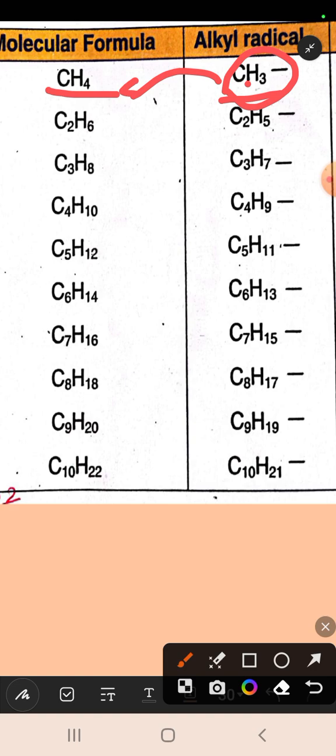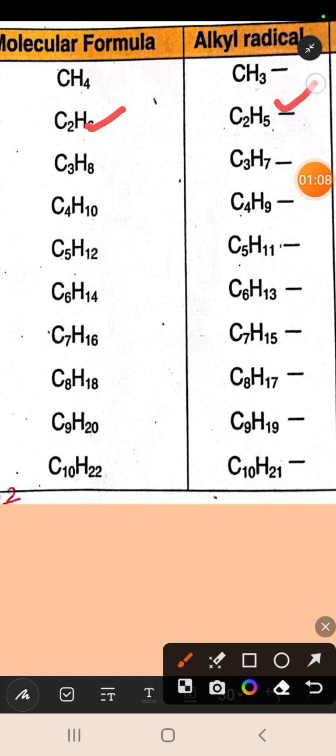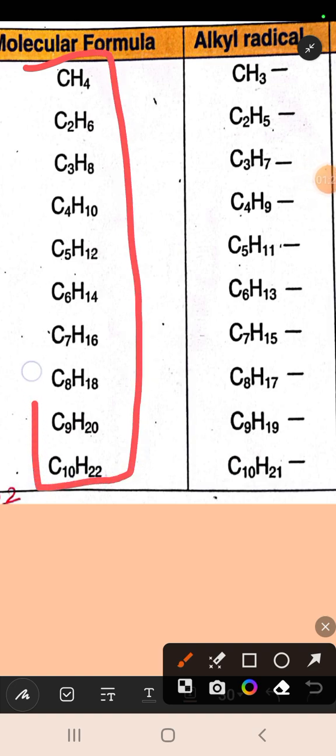So alkyl radicals are derivatives of alkanes. The next alkane is ethane, and its derivative is ethyl radical. Next is propane, and its radical is propyl radical. We can form any alkyl radical by removing a hydrogen atom from any alkane.